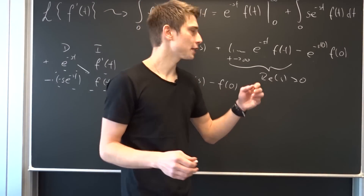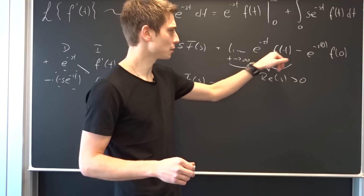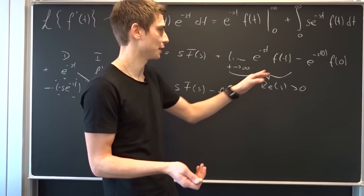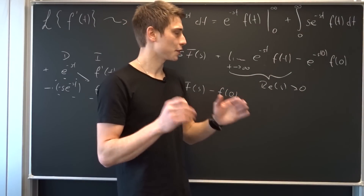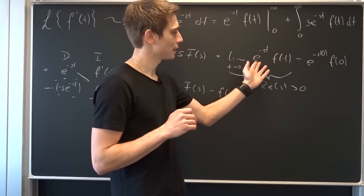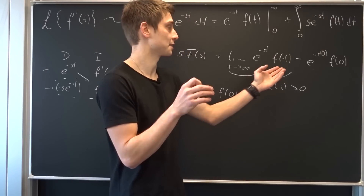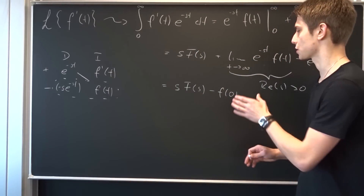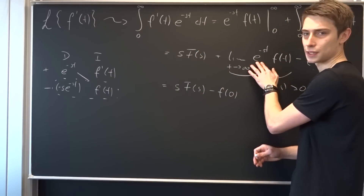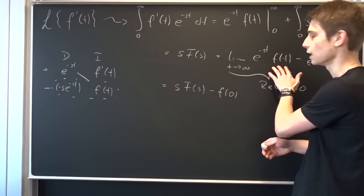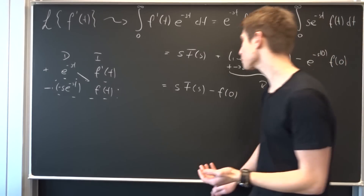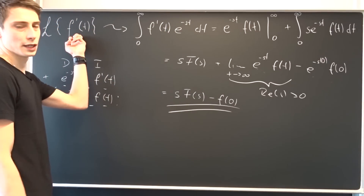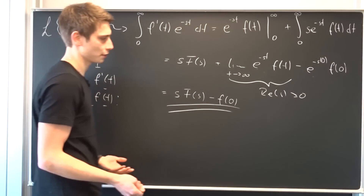You could argue that letting t approach infinity gives f of infinity — wouldn't that be an infinity over infinity situation? We are just going to assume that this exponential function grows way faster than f of t. So without any restrictions, we assume that e to the minus infinity dominates f of t, and then we are done. So this is our solution: that's the Laplace transform of the first derivative of some function f of t, equal to s times capital F of s minus f of zero.